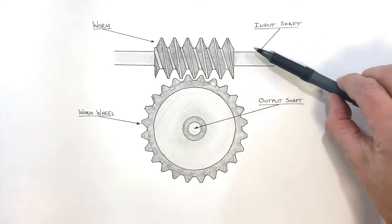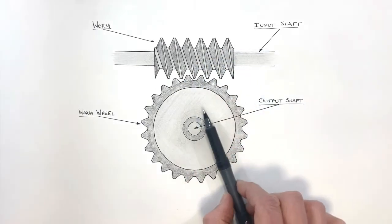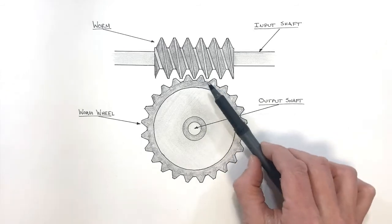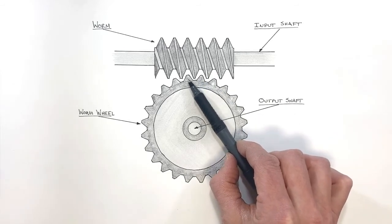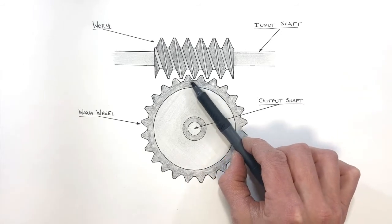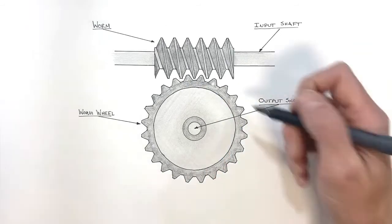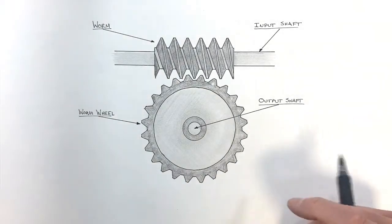So if this shaft rotates around once, this worm wheel, and thus with it, the output shaft is only going to rotate through one tooth and the angle that is associated with one small tooth. Now this gear that I've drawn here, this worm wheel, has a tooth count of 24 teeth.